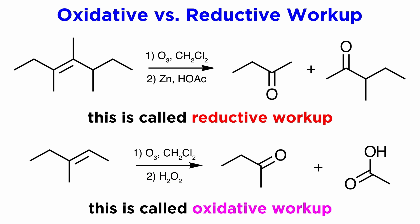So given this example, we know we are going to get two fragments as products, the first being a ketone, as previously expected, but now the other fragment, which would have been an aldehyde under reductive workup, will now be the corresponding carboxylic acid.